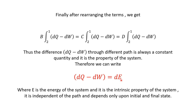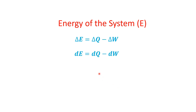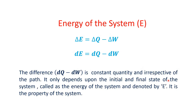When dE equals zero, dQ equals dW. The quantity E is the intrinsic property of the system — independent of path and dependent only on the initial and final state. Whether you go via path B, C, or D, in each case this quantity equals dE. We can write: ΔE = ΔQ − ΔW, or dE = dQ − dW. The difference dQ − dW is a constant quantity, irrespective of path, depending only on the initial and final state of the system — this is called the energy of the system, denoted E.